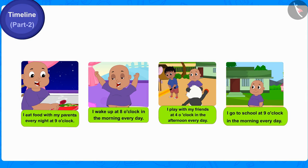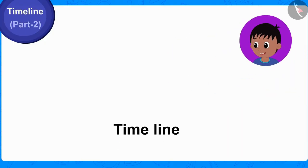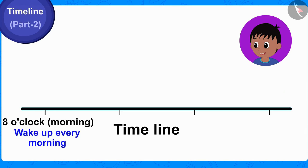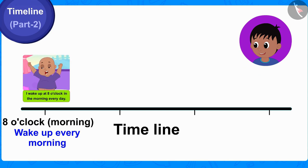Well done children, you have found the right answer. Babalu wakes up every day at 8 o'clock in the morning. Raju drew a timeline in Babalu's diary and wrote 8 o'clock in the morning as the very first task. He told Babalu that he can write 'Wake up every morning' under this, or if he wants, he can also draw a picture for it.